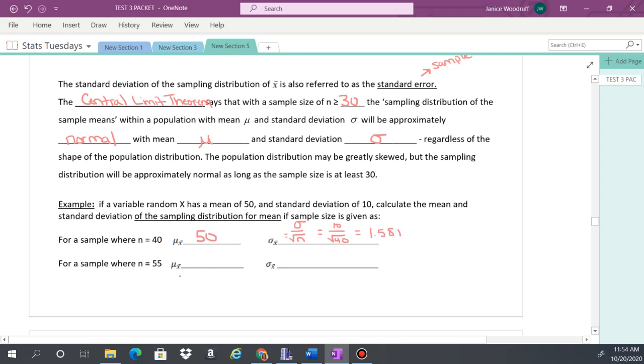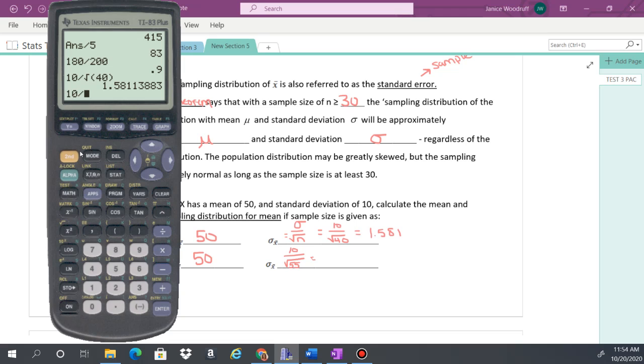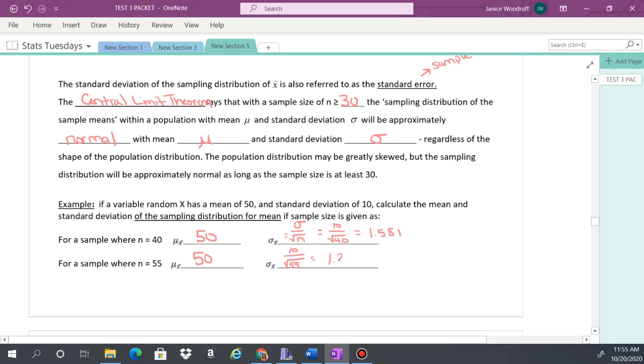So if my sample size is now 55, the mean is still 50. Mean is not changed. Standard deviation is changed. So now this is 10 over the square root of 55. That's 10 divided by square root of 55, which is 1.348. So as your sample size gets larger, notice that the standard deviation is getting smaller. It's getting closer to that normal distribution with a mean of 0, a standard deviation of 1. So it'll get closer to 1 as you have a larger sample size.